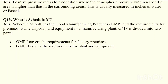What is Schedule M? Schedule M outlines the GMP requirements for premises, waste disposal, and equipment in a manufacturing plant. GMP is divided into GMP1, which covers the requirements for factory premises, and another part covering requirements for plant and equipment.